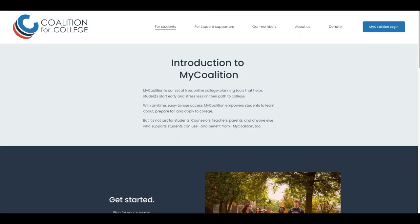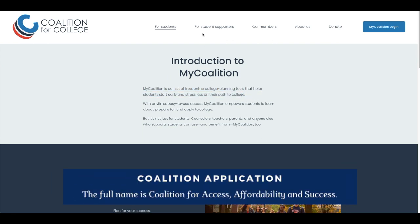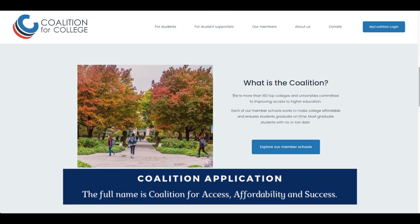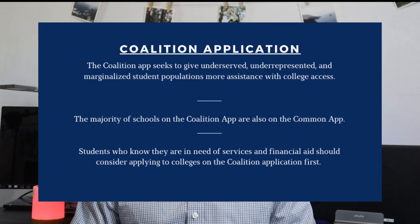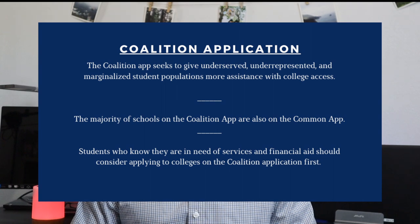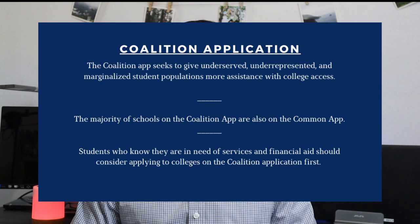In today's video I'll be going over the last major college application that most students will be looking at when they're applying to schools. The application I'm talking about is the Coalition app, which is a college application platform specifically for private colleges and universities. The Coalition stands for the Coalition for Access, Affordability, and Success and is seen as the direct comparator to the Common App. The Coalition app seeks to give underserved, underrepresented, and marginalized student populations more assistance with college access, and the majority of schools in the Coalition app are available on the Common App as well. But the Coalition app is a good idea for students who know they will need significant financial aid since a lot of the schools on the list can provide it for them.